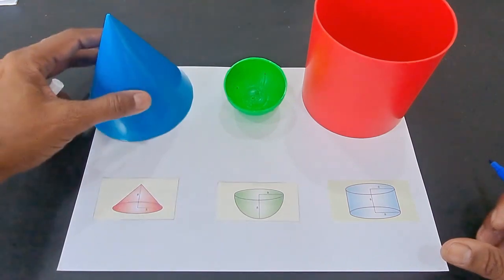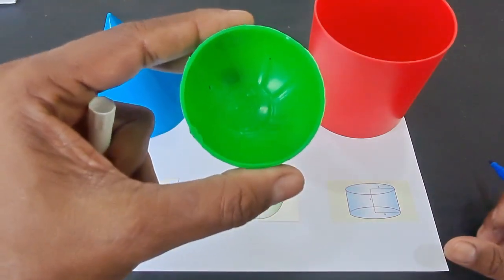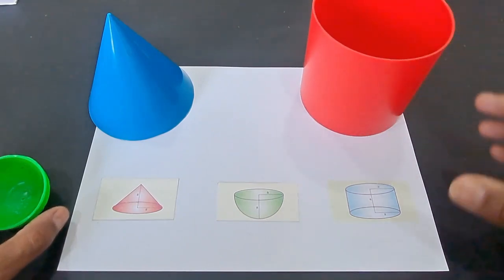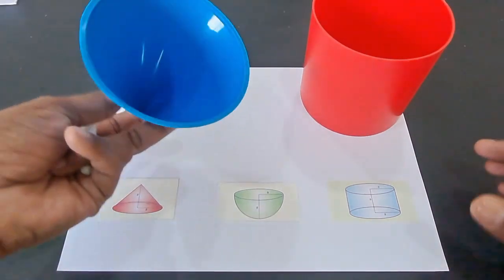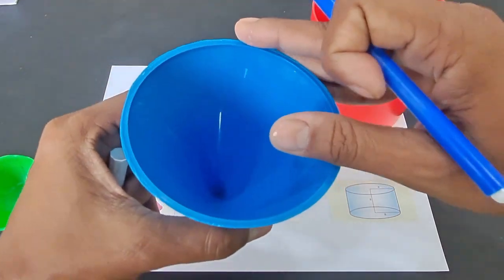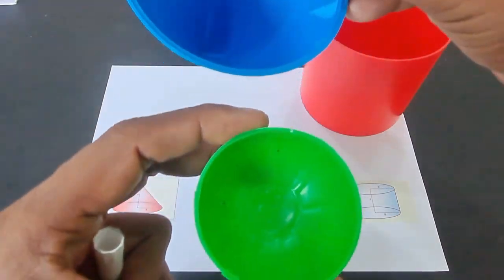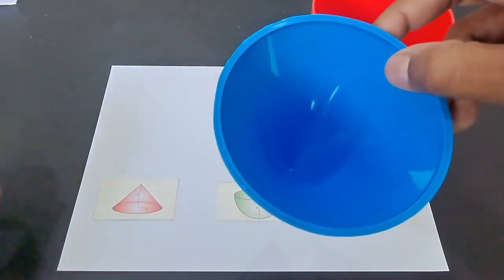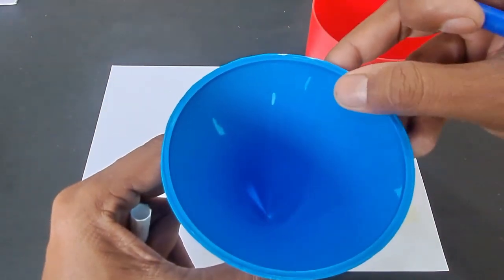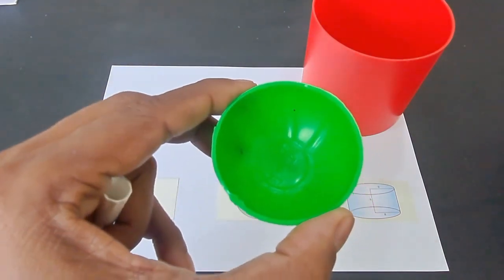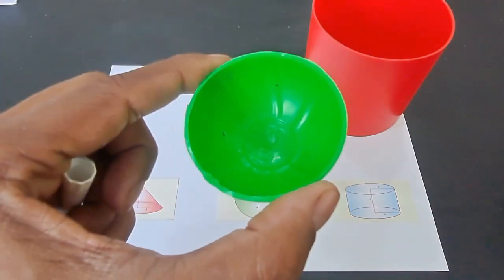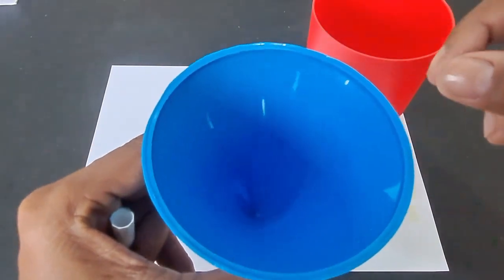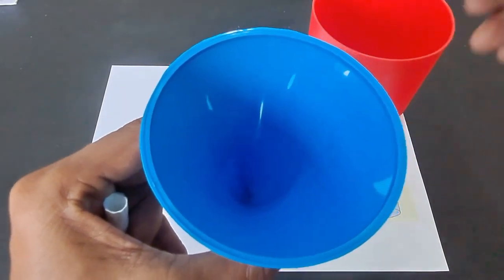So we have taken a cone here, you can see a hemisphere here, and a cylinder here. What we are going to do is fill this cone with sand up to the brim and then pour it into the hemisphere. We will do this two times. So fill the cone two times and pour it into the hemisphere. You will find that the hemisphere gets filled up to the brim.